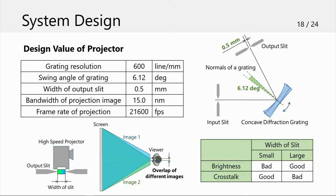When the width of the output slit is large, a projector can project more light at once and the display image becomes bright. However, there is a possibility that viewers observe different images simultaneously due to overlap of display images, because the bandwidth of the projection image becomes wide. Thus, it is necessary to decide the width of the output slit considering the balance of both brightness and image separation.